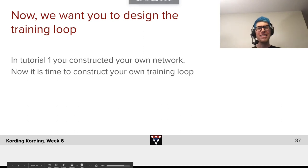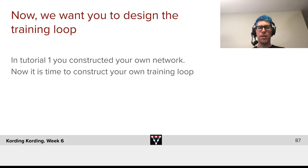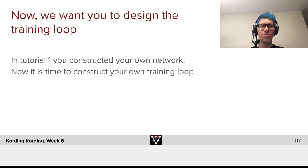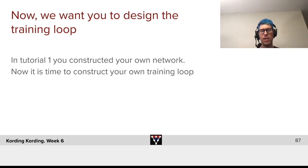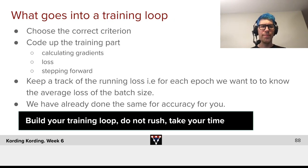Now we want you to design the training loop. In tutorial one, you constructed your own network, and it's great that it worked. Now it is time to construct the other part of deep learning code, namely your training loop.